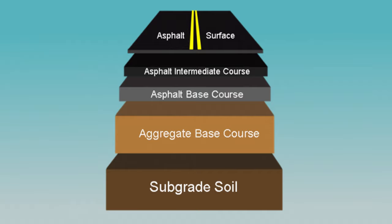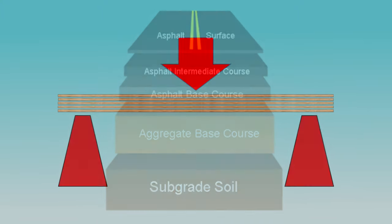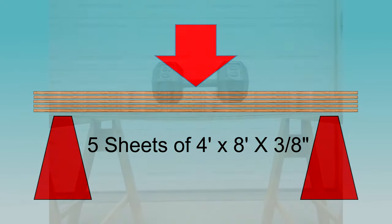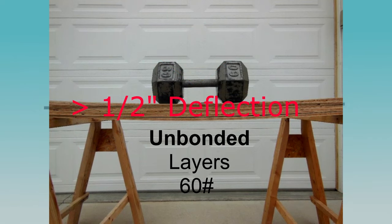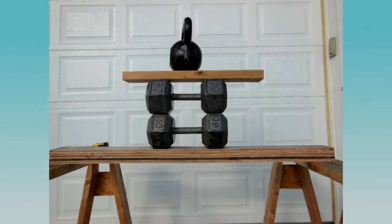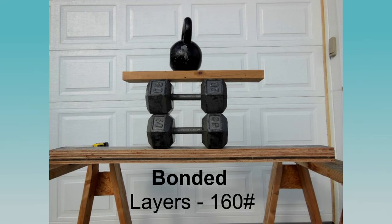Consider what happens to a stack of five sheets of three-eighths inch plywood. Placing them between two sawhorses and placing a 60-pound dumbbell in the center causes more than a half inch of deflection. In this unbonded condition, each individual layer acts independently. Taking those same five sheets and gluing them one on top of another produces a fully bonded structure that functions as a monolithic slab of wood.